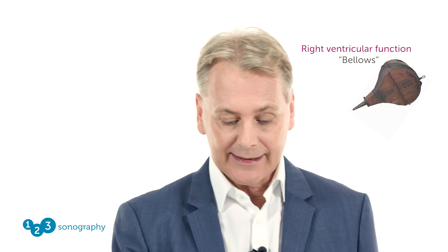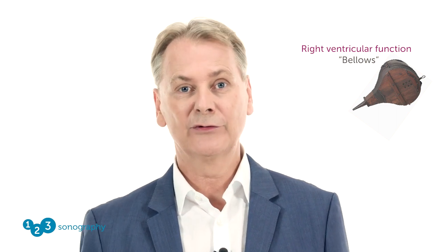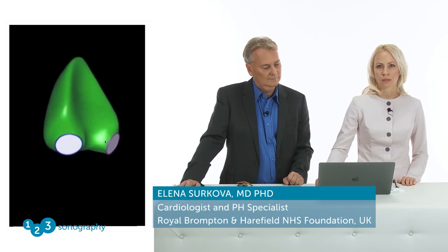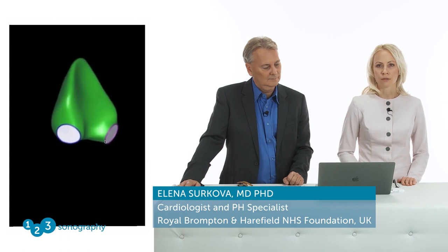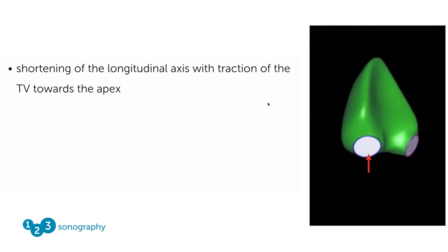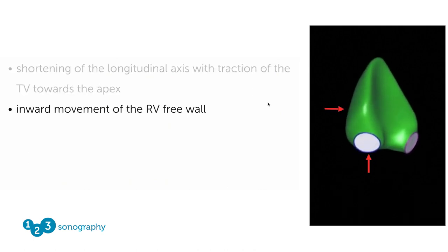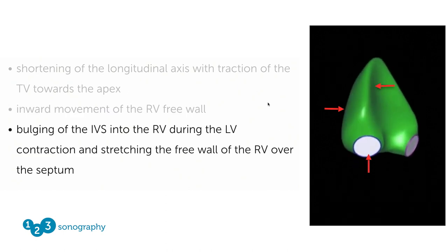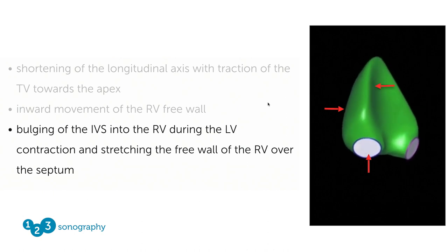Physiologists often compare the contractile function of the right ventricle to that of a bellows. Let's hear from Elena which different components of right ventricle function we can actually describe. There are three mechanisms of RV systolic function. The first one is the longitudinal shortening of the right ventricle and the traction of the tricuspid valve towards the apex. The second one is the inward movement of the RV free wall. And finally, the last one is bulging of the interventricular septum into the right ventricle during left ventricular contraction and stretching the free wall of the right ventricle over the septum.